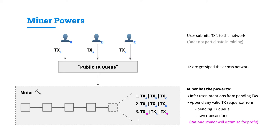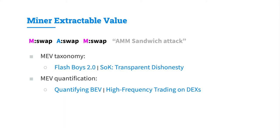The rational miner will always optimize for profit and therefore attempt to generate the sequence that does so. Miner extractable value has been studied in quite some detail by recent work. A common attack is the automated market maker sandwich attack, where a honest user action — a swap action — is sandwiched between two miner-injected swaps.